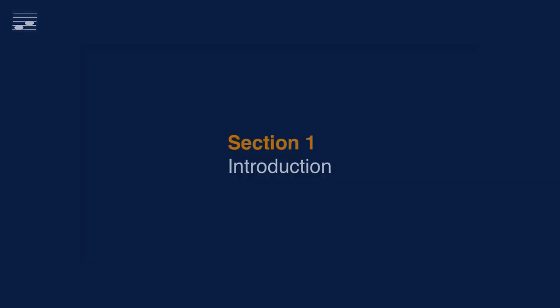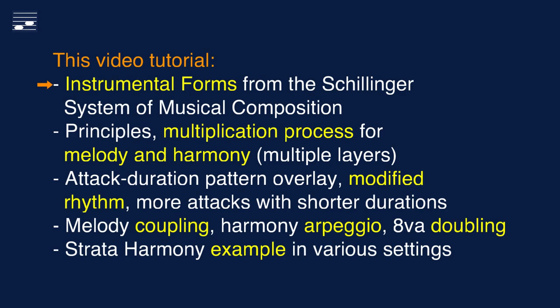In this video tutorial you'll learn about Schillinger instrumental forms. The basic principle is a multiplication process applied to either melody or harmony. This process implies rhythm creation with an attack duration pattern overlay and yields more attacks with shorter note durations. We'll look at melody coupling, arpeggio patterns, harmony doubling, and I'll use a strata harmony example to demonstrate these techniques.